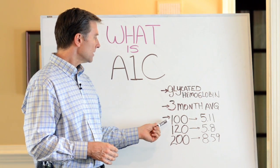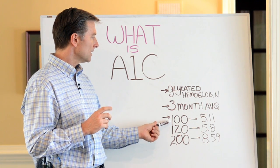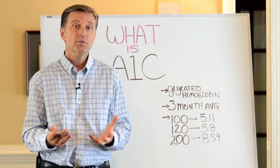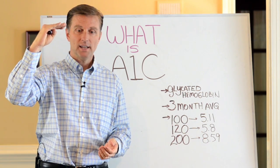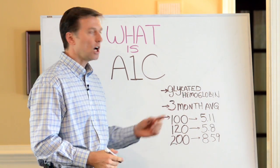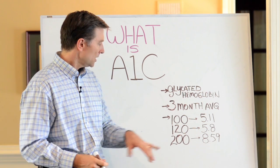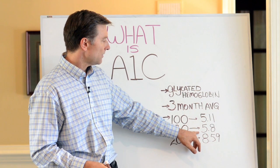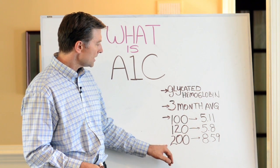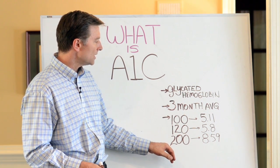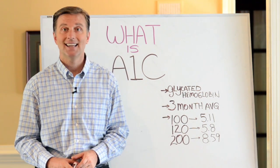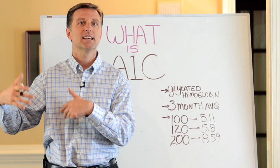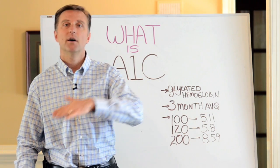If your blood sugars average 100, the A1C would be 5.11. That's really the target — a little bit lower — because we want between 80 and 100 as your normal blood sugar. Let's say it's averaging 120, it's going to be 5.8 — a little high. Let's say it's averaging 200, that's 8.59 — that's way too high. I've seen people up to 11, 12, or even 16. The numbers are off the chart.